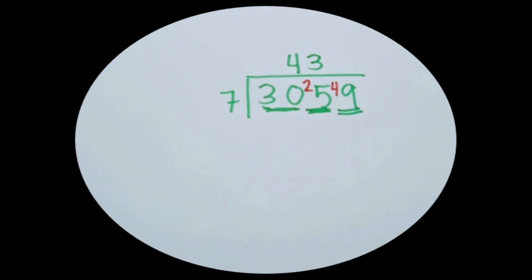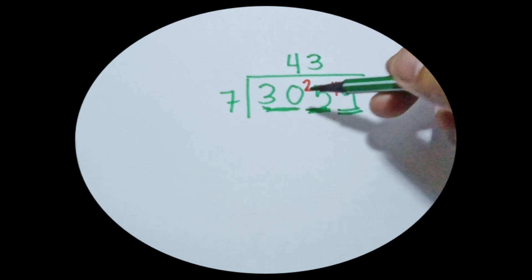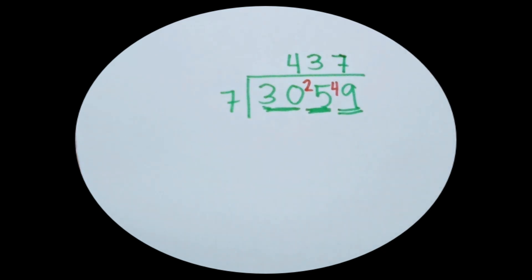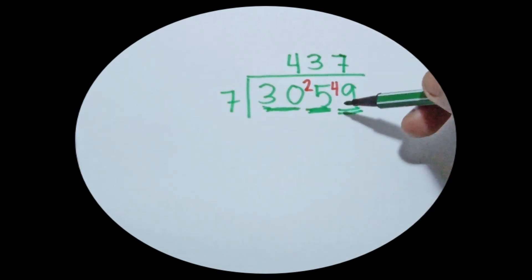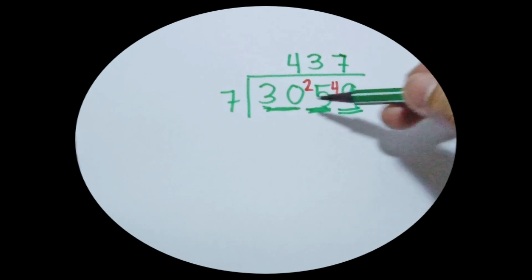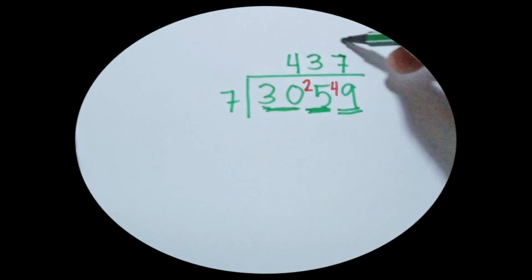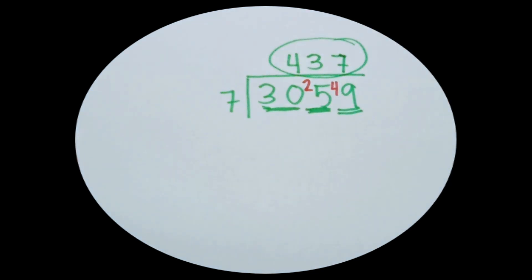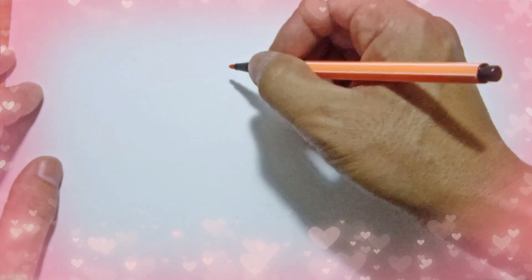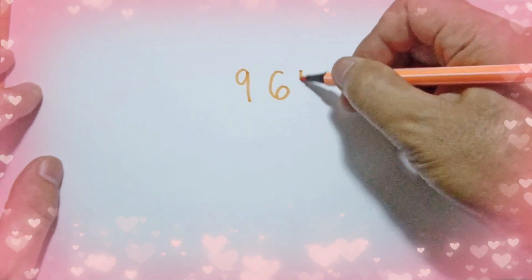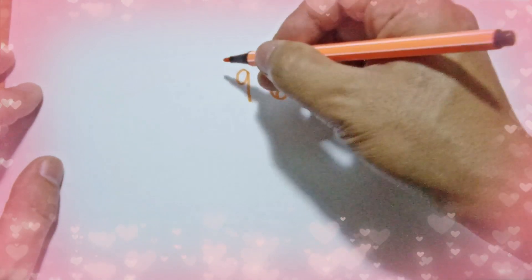The next question is how many 7s can you make from 49? The answer is 7. 7 times 7 is 49, and 49 minus 49 is 0. So the final answer when you divide 3059 by 7 is 437. For the second example, 9652 divided by 4.